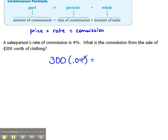So, .04 or 4% of $300 is what this person will take home from this sale. So, when we multiply 300 times .04, we get 12. That means that that person is going to make $12 off of that $300 sale.